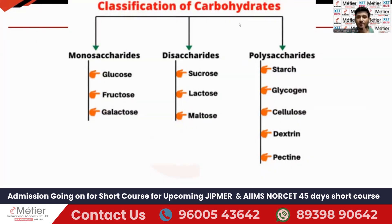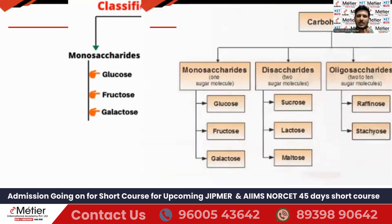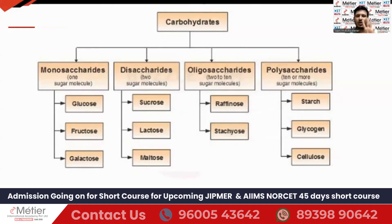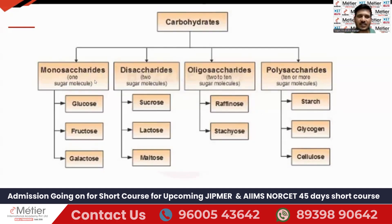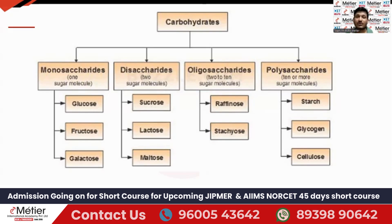The classification of carbohydrates has four types: monosaccharides, disaccharides, oligosaccharides, and polysaccharides. Monosaccharides have only one sugar molecule — examples are glucose, fructose, and galactose. Disaccharides have two sugar molecules — examples are sucrose, lactose, and maltose. Oligosaccharides have two to ten sugar molecules — examples are raffinose and stachyose. Polysaccharides have ten or more sugar molecules — examples are starch, glycogen, and cellulose.